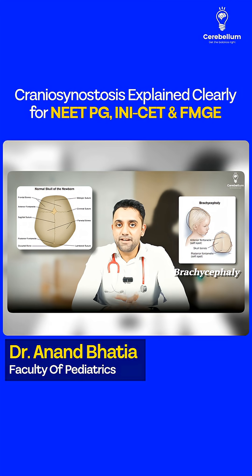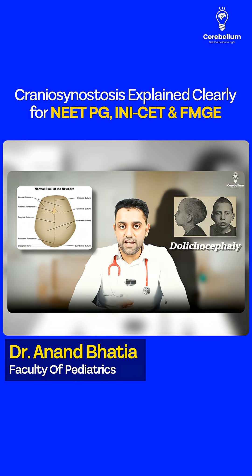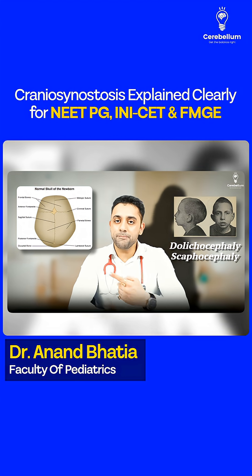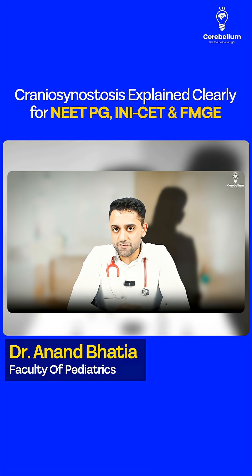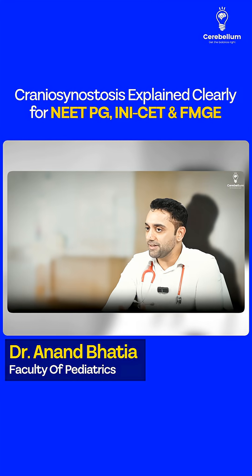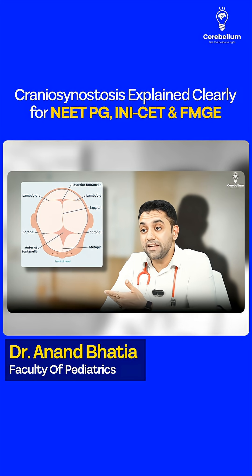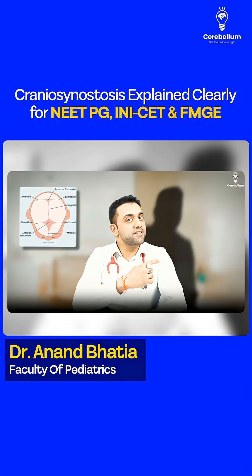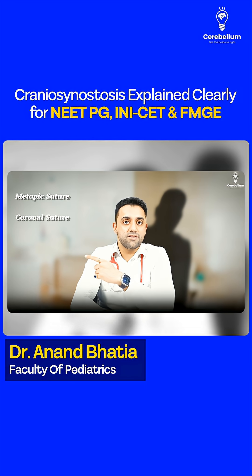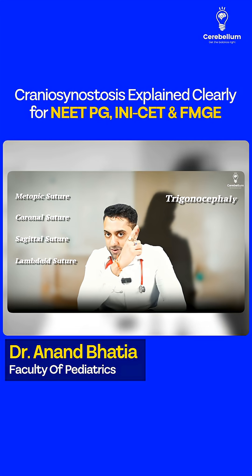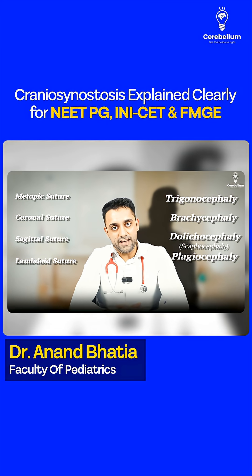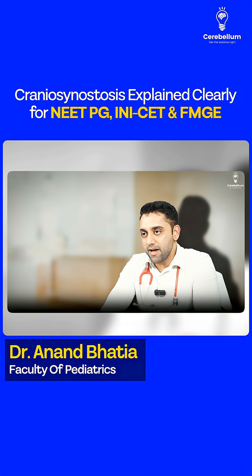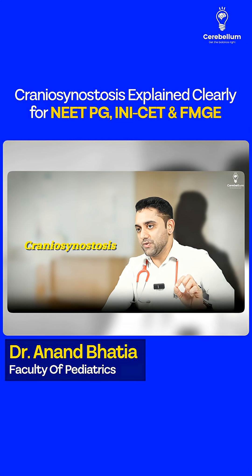Premature fusion of the sagittal suture causes dolicocephaly, also known as scaphocephaly — remember: S for sagittal, S for scapho. Last but not least, premature fusion of the lambdoid suture causes plagiocephaly. So: metopic→trigonocephaly, coronal→brachycephaly, sagittal→dolicocephaly/scaphocephaly, lambdoid→plagiocephaly. These are the important points for the exam.